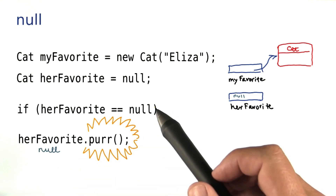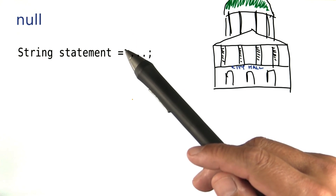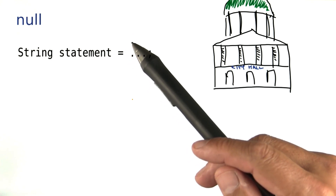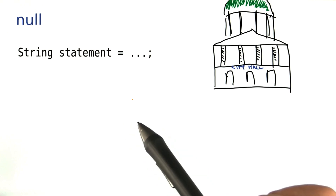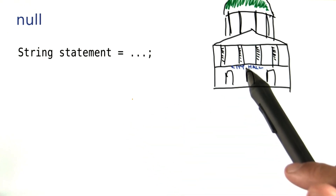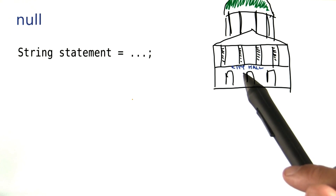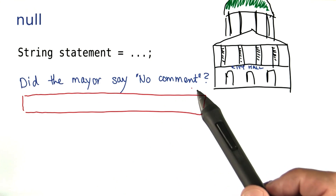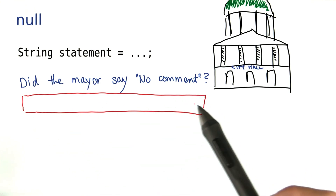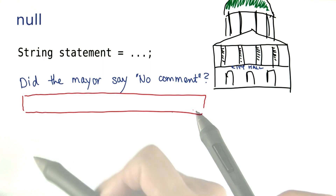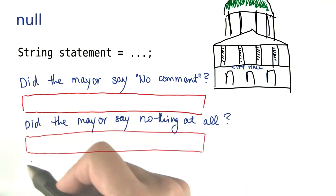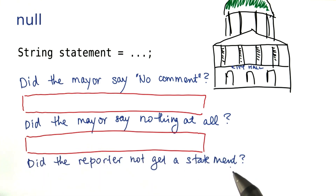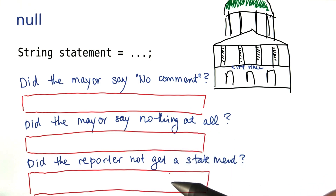Don't do it. Instead, make this test first. I've prepared a little quiz where I'm going to ask you about several kinds of tests. Here's the situation: our intrepid reporter went to city hall to get a statement from the mayor. I'd like you to give me the Java code to test whether the statement was one of the following: did the mayor say no comment? Just type in here what you would put inside the parentheses of an if statement to check for that. A couple more: did the mayor say nothing at all? And finally, did the reporter not manage to get a statement — maybe he was stuck in traffic. Just type in the conditions for each one of them.